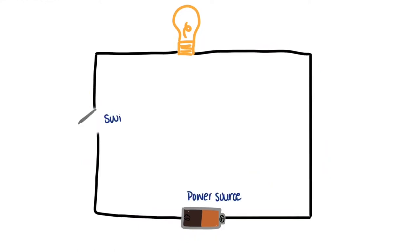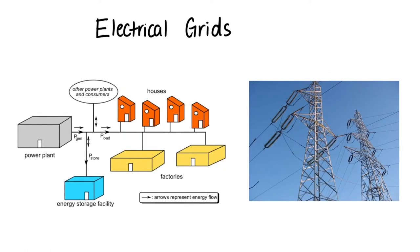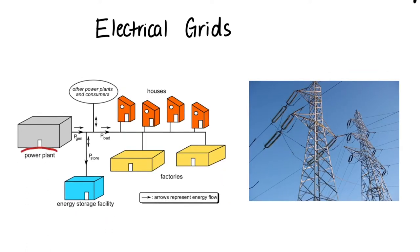Here we saw a simple representation of circuits, but in real life they're much more complicated. Our homes get power through something called an electrical grid, which is basically a very large network of connections from power generating plants to our homes that brings us electricity. Have you ever lost power in your house and noticed that the entire neighborhood also lost power? It's because you're all powered by the same electrical grid.